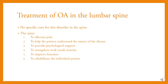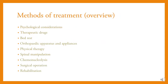Treatment of OA in the lumbar spine: there is no specific cure for this disorder. The aim is to alleviate pain, help the patient understand the nature of the disease, provide psychological support, strengthen weak trunk muscles, improve function, and rehabilitate the individual patient. Methods of treatment include psychological consideration, therapeutic drugs, bed rest, orthopedic apparatus and appliances, physical therapy, spinal manipulation, chemonucleolysis, surgical operation, and rehabilitation.